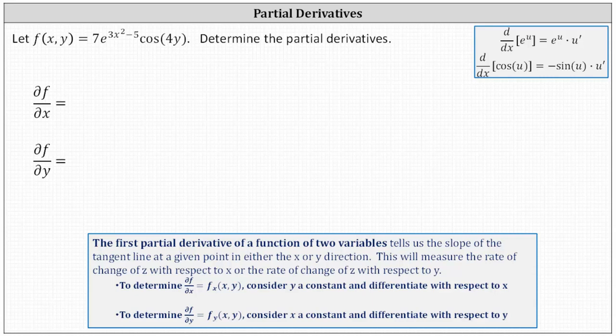To determine the partial of f with respect to x, we treat y as a constant, which indicates we are going to treat seven as well as cosine four y as constants, and differentiate e to the power of the quantity three x squared minus five with respect to x.